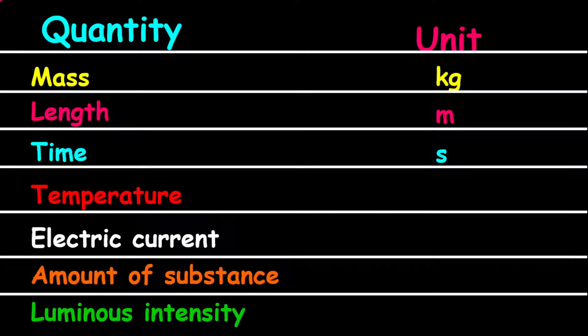The unit for temperature is Kelvin, represented by K. The unit for electric current is ampere, represented by A.